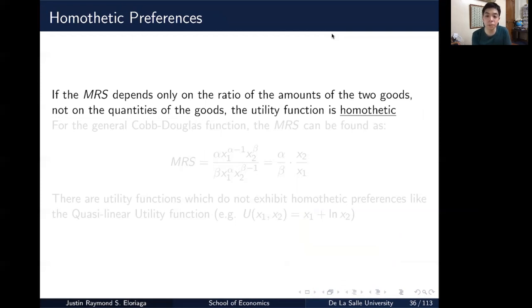If the MRS depends only on the ratios of the amounts of the two goods, not on the quantities of the goods. So the ratio of the amounts of the two goods. So if the MRS depends on the ratio of the amount of the two goods, not on the sheer quantities of the goods, then the utility function is said to be homothetic.